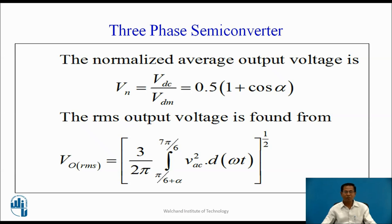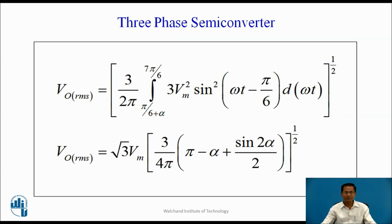The RMS output voltage is found from: V0_rms = √[(3/2π) ∫(π/6+α to 7π/6) Vdc² d(ωt)]. After solving, we obtain V0_rms = √3 Vm × [3/4π × (π − α + sin(2α)/2)]^(1/2).